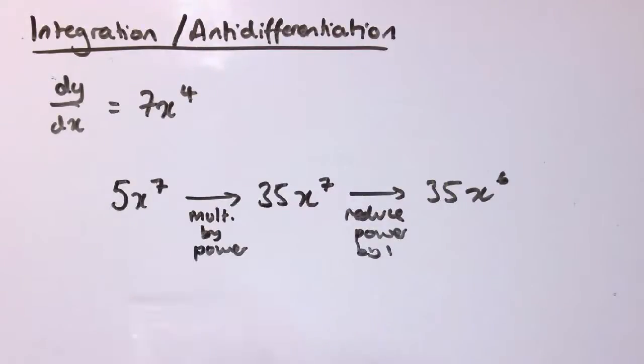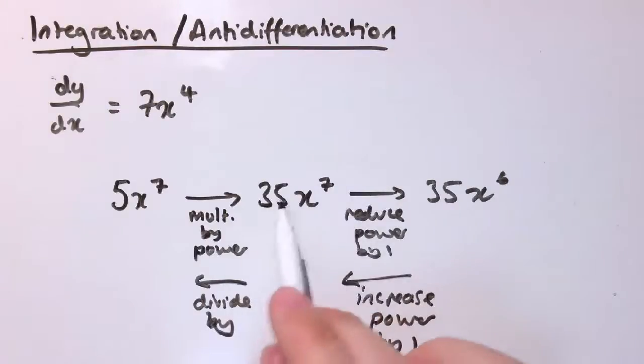So if we want to undo that process, we're going to need to undo those operations one at a time. So if I wanted to go back from here to here, I'd have to start by increasing the power by 1, so I'd get back to this, and then I need to divide by the power, and it's this power here, so it's not the original power that I started with here, it's, if you like, I'll call it the new power here.